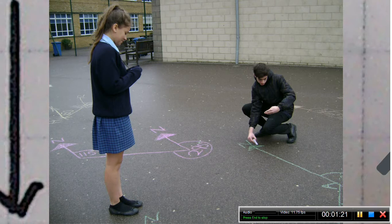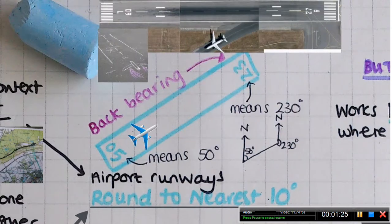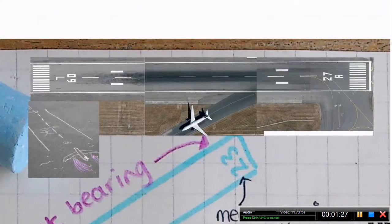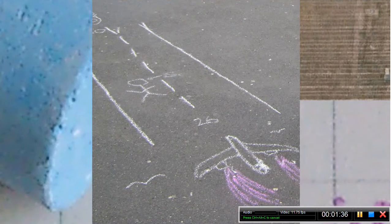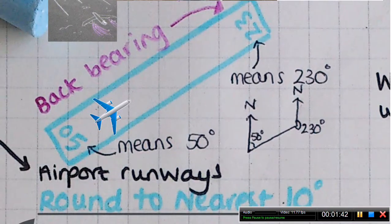The second activity was airport runways. Did you know that airport runways have bearings on each end of them so that pilots can land the plane at the right angle and line it up with the runway? They're rounded to the nearest 10 degrees. So I got pupils drawing runways all over the playground — they looked fantastic and the pupils enjoyed it. They got really good at working out back bearings, because the bearing at the end of the runway is the back bearing.